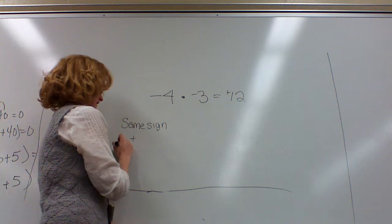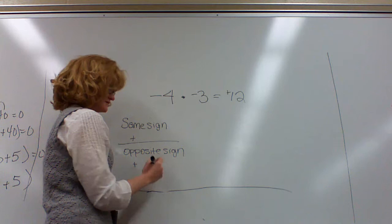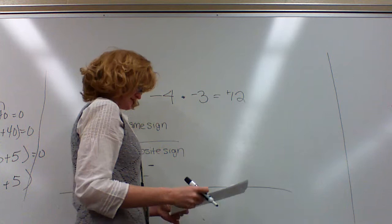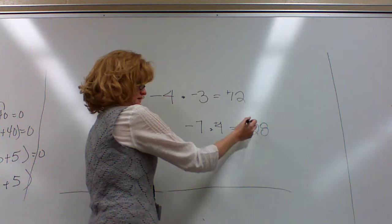If they have opposite signs, one of them's positive and one of them is negative, then they become negative. Let's do another example. Negative 7 times 4. 7 times 4 is 28, but because this one's negative and this one's positive, it becomes a negative 28.